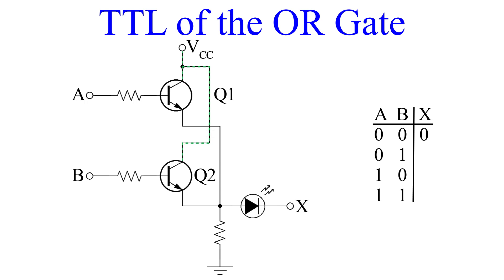Let's apply voltage to B and leave A low. Transistor Q2 now has a bias voltage allowing current to flow through the transistor. This turns on our LED, and we have an output of 1.